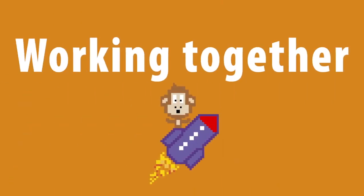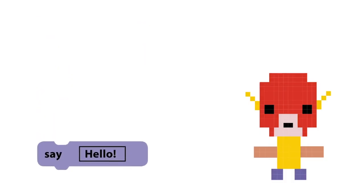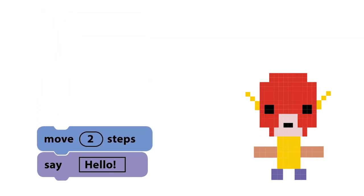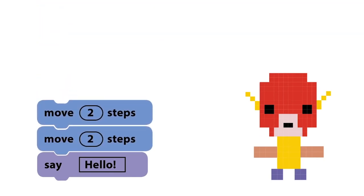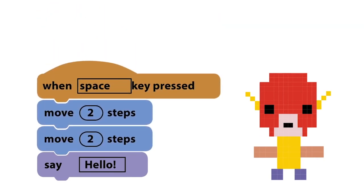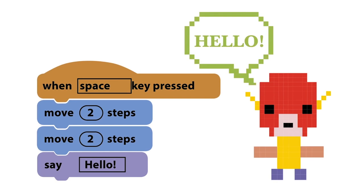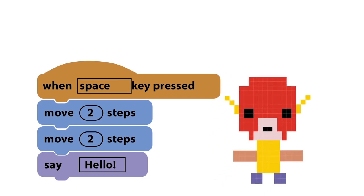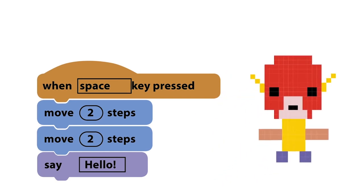Working Together. Games are usually made up of several sprites working together, each controlled by their own script. Scripts make sprites move about, crash into each other, create sounds, and change color or shape. Some sprites act as enemies to make a game more difficult.